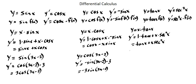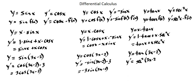And our second example: y equals tangent of (3x minus 2). The derivative of y equals secant squared of (3x minus 2) times the derivative of (3x minus 2), which is 3. This simplifies to 3 times secant squared of (3x minus 2).